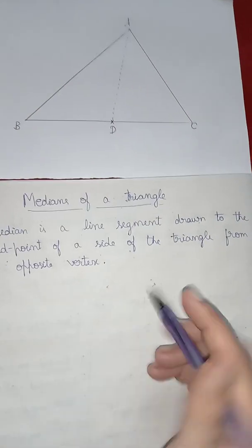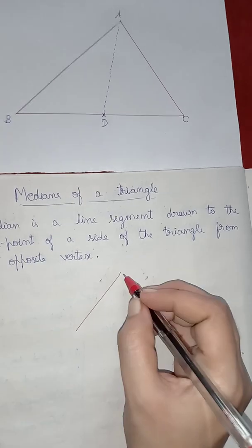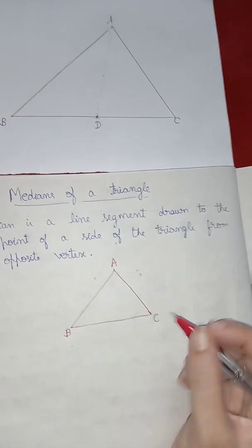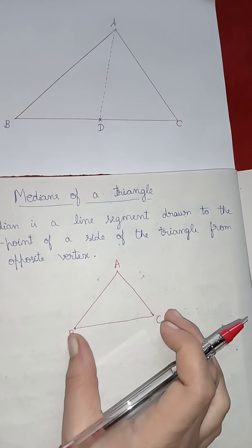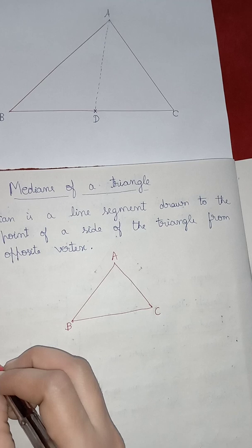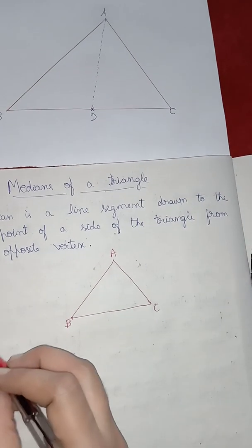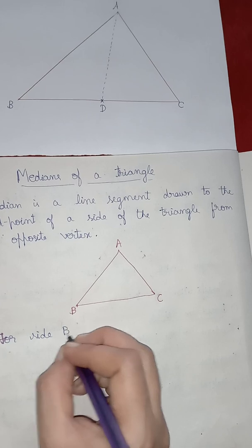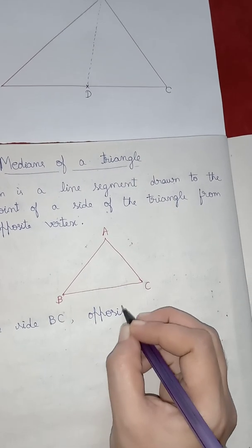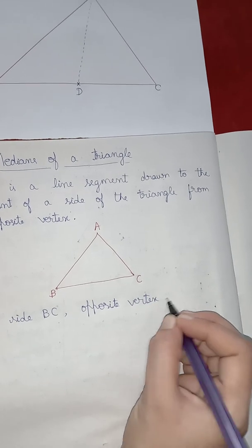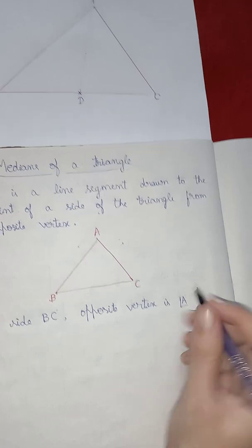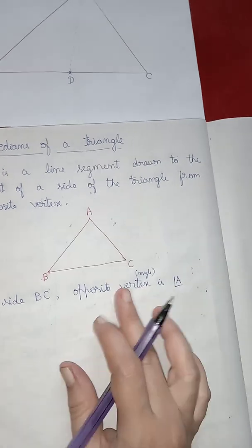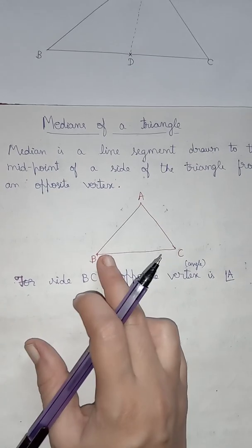Let me explain you clearly. See, when you have a triangle A, B, C, first I will write for one side which is the opposite vertex. Now, see, for side B, C, opposite vertex is angle A. Opposite angle or opposite vertex, you can write as opposite angle also. Vertex which is opposite to the given side.